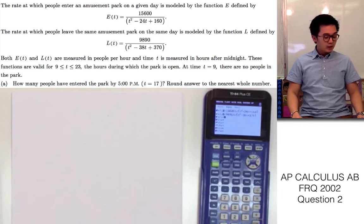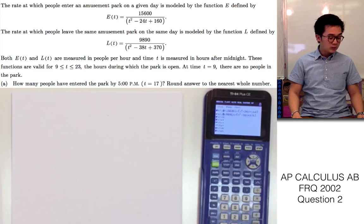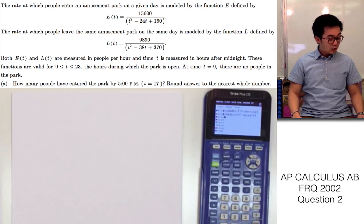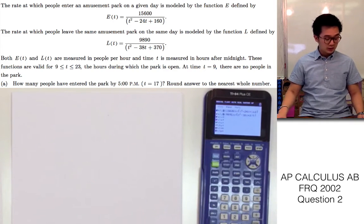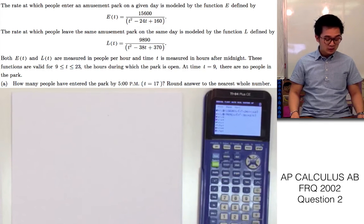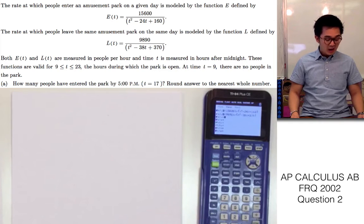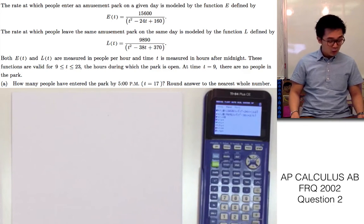Today I'm going to answer an FRQ from 2002, question number 2. In this problem, I'm given the rate at which people enter the amusement park, given by E of T. I'm also given the rate at which people leave the same amusement park on the same day, given by L of T. Both E of T and L of T are measured in people per hour at time T, measured in hours after midnight. These functions are valid between 9 and 23, which are the hours during which the park is open. At time T equals 9, there are no people in the park.